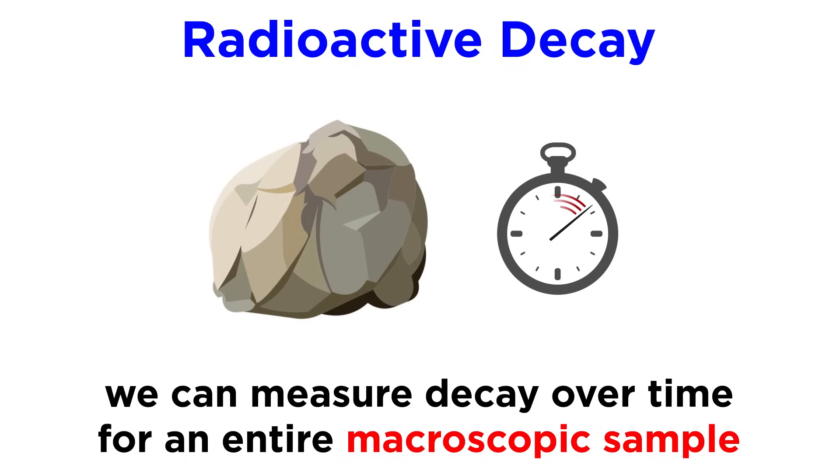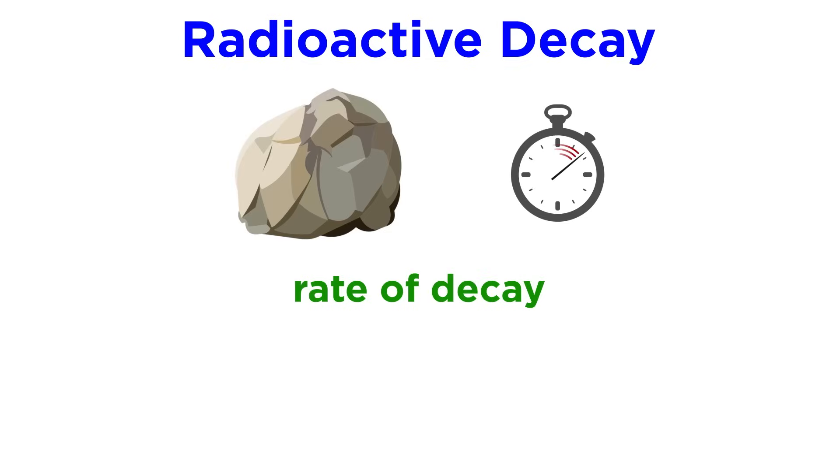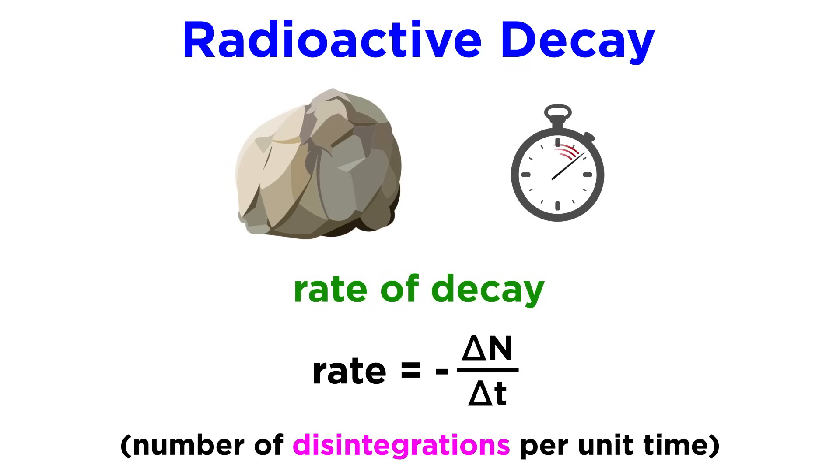This is a very reliable value, but for each individual nuclide we can only discuss probabilities. But again, we can still discuss a rate of decay for a sample, which is negative delta n over delta t, or the number of nuclide disintegrations per unit time.